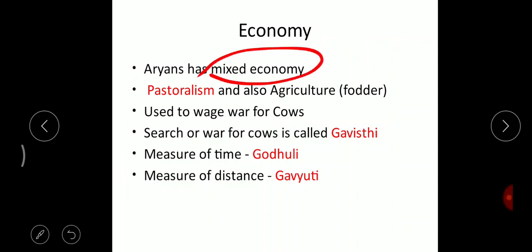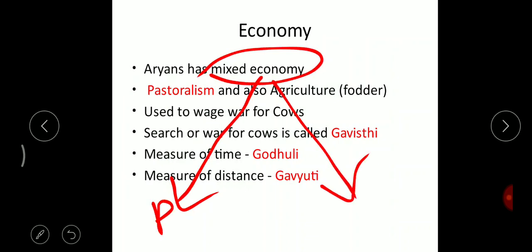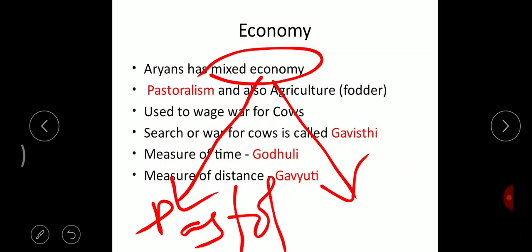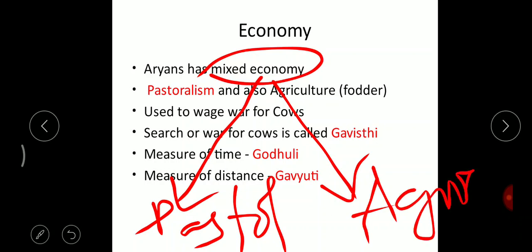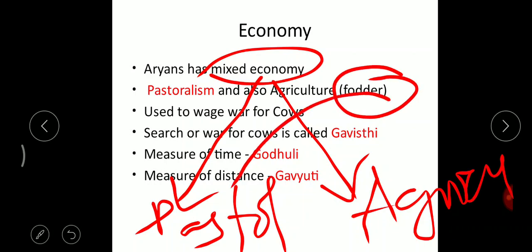Their mixed economy had two main sources of income. The first and primary was pastoral — that is, cattle rearing. Most Aryans gave greater importance to cattle rearing. The secondary economy was agriculture, and most of the time agriculture was done to cultivate fodder to feed the cattle.